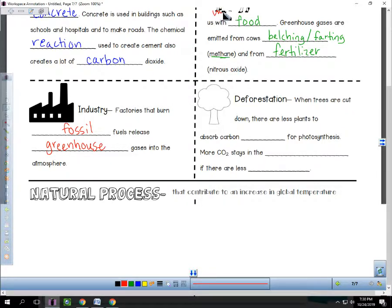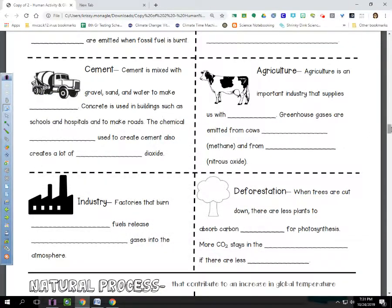And then, deforestation. Deforestation is when all of the trees are cut down. And there are fewer plants to absorb the carbon dioxide for photosynthesis in an area. That means that more carbon dioxide stays in the atmosphere if there are fewer trees.